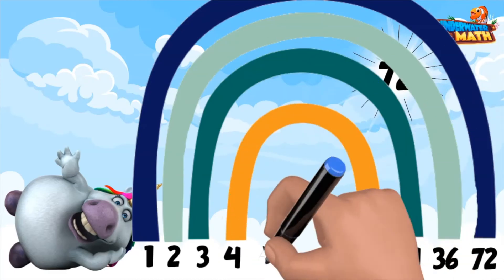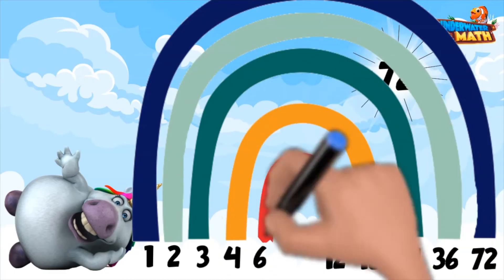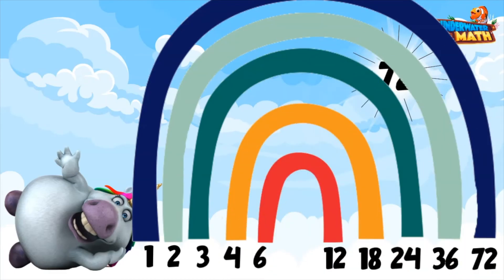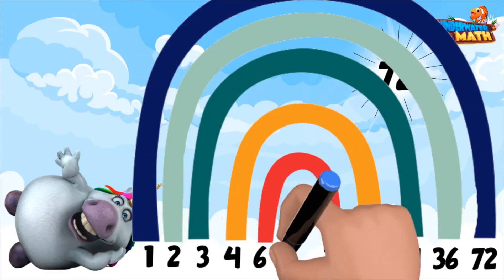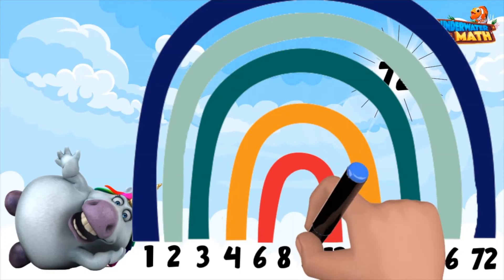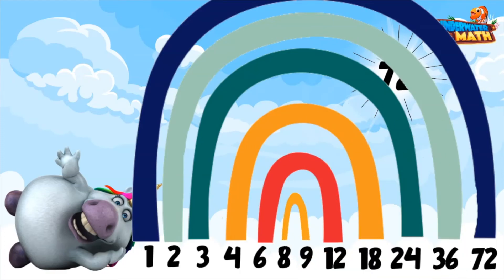Then 6 times 12. I cannot multiply 7 by anything to make 72, so I will skip that one. Finally, we have 8 times 9 to make 72. Since I hit my next number up in my factor pair, 9, I know there are not any more factors of 72.